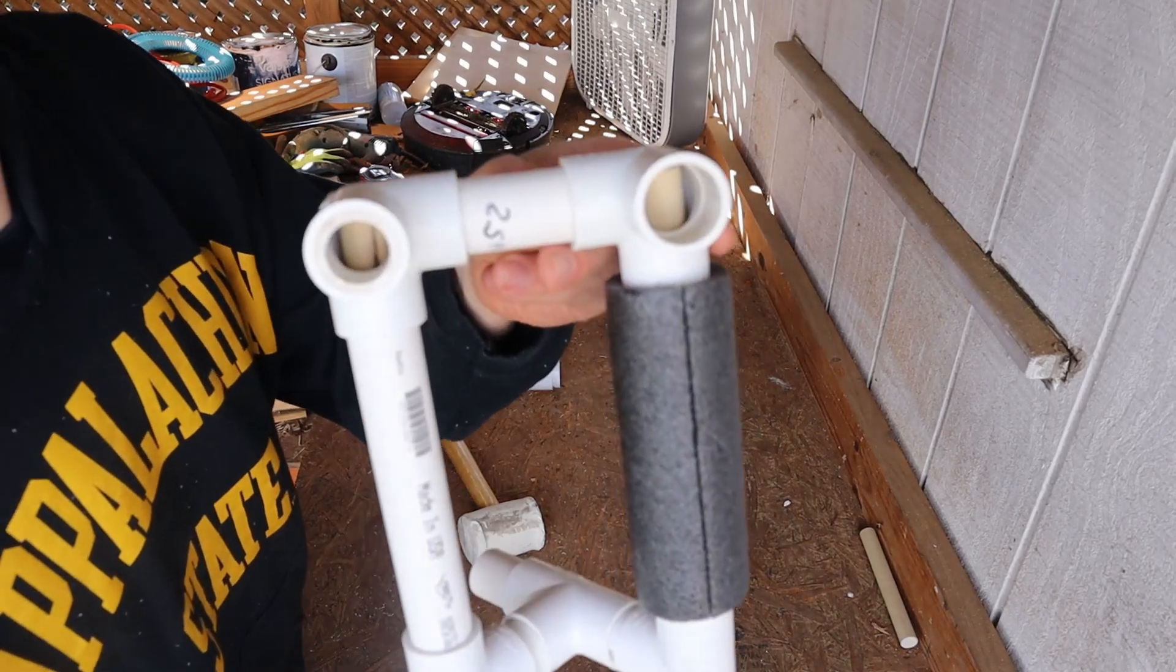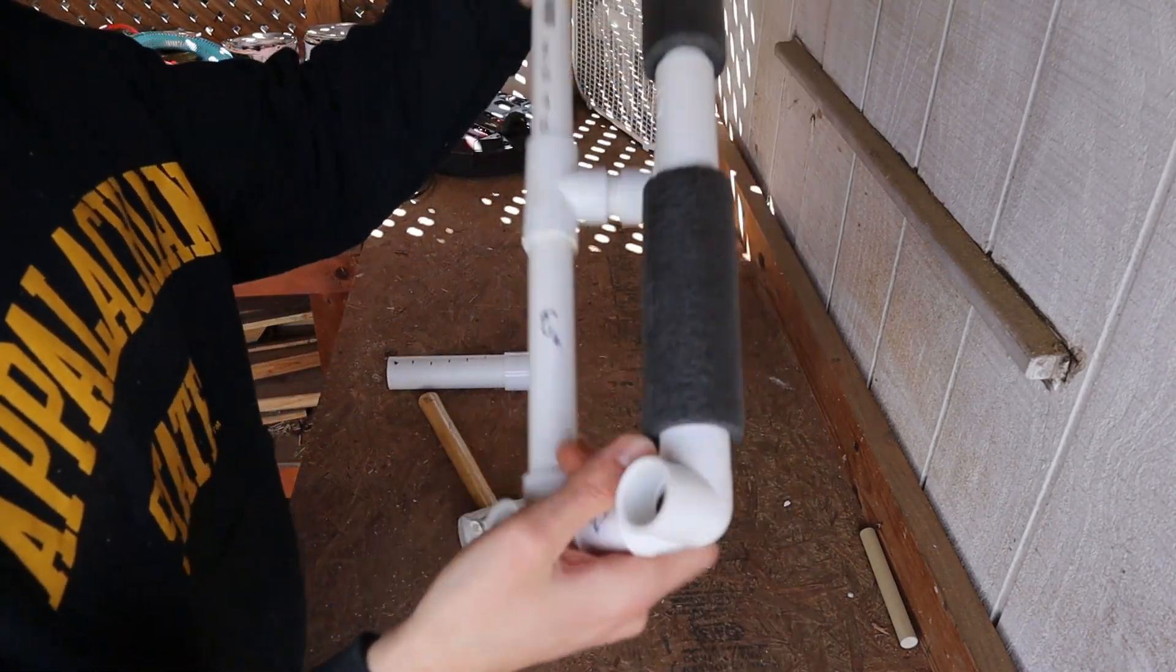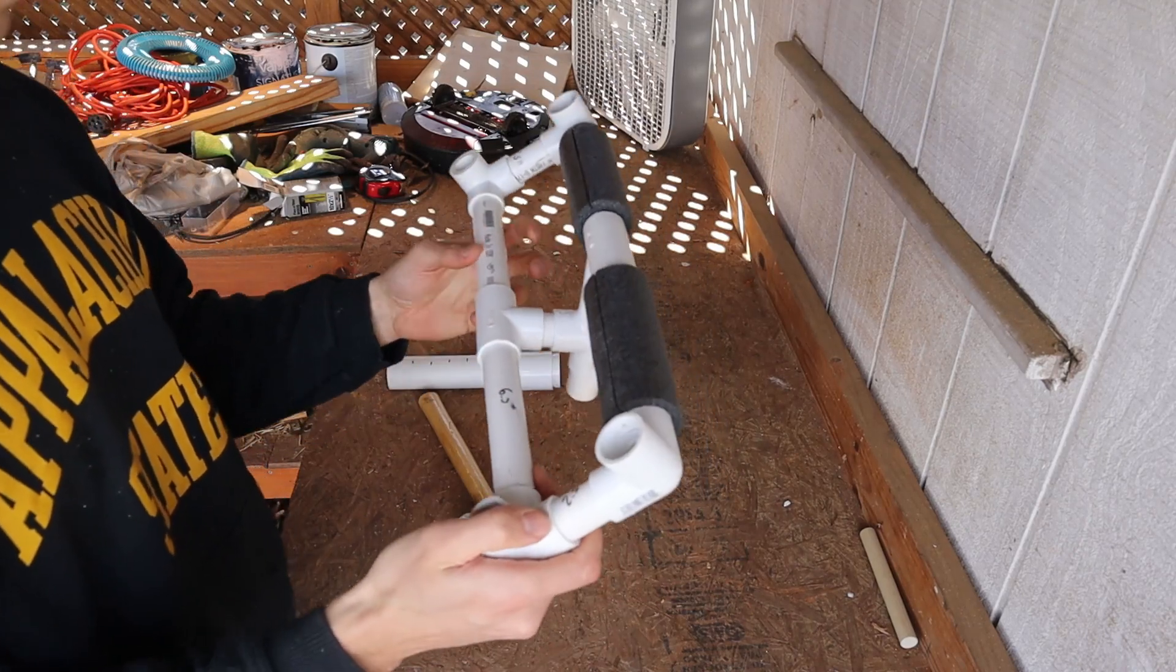So you can see that dowel is just feeding all the way through to the end just to give it some extra structural support to take some of that flex out of it.